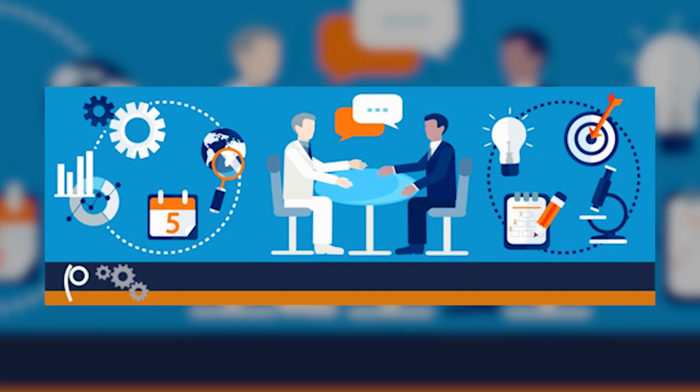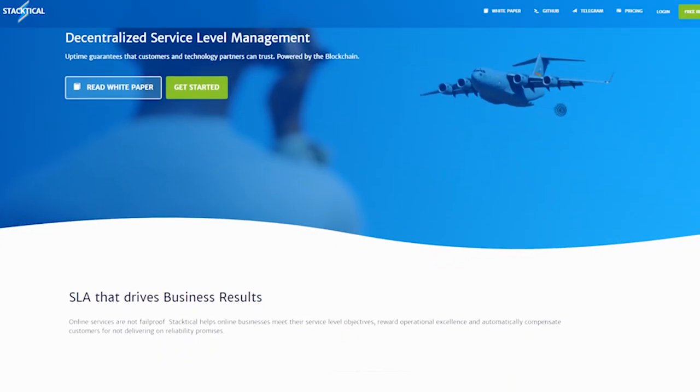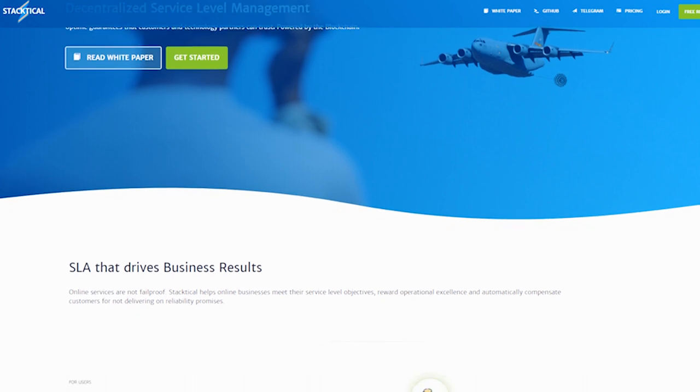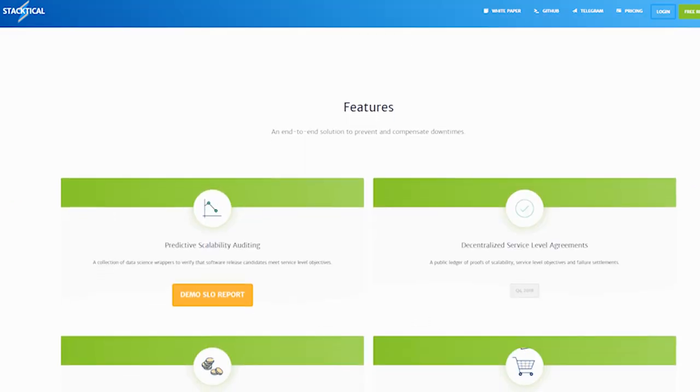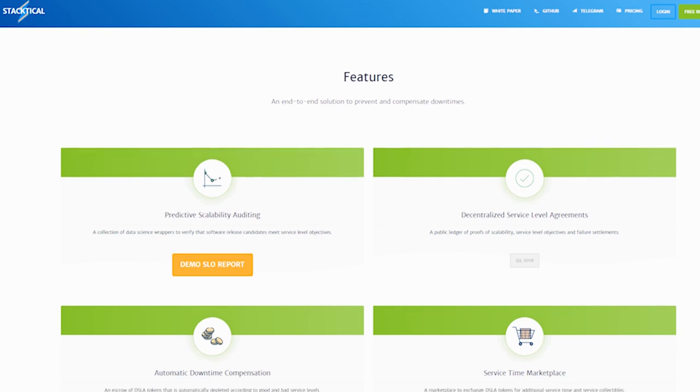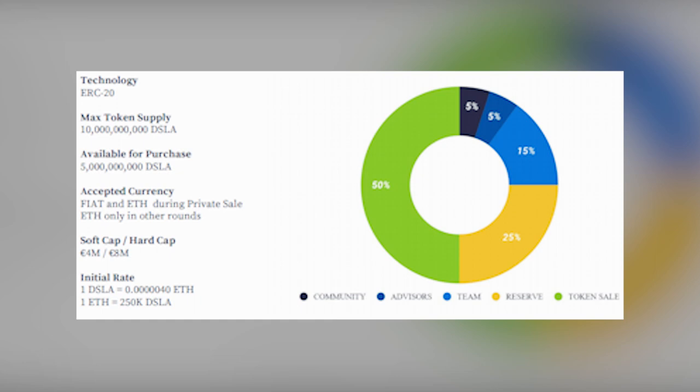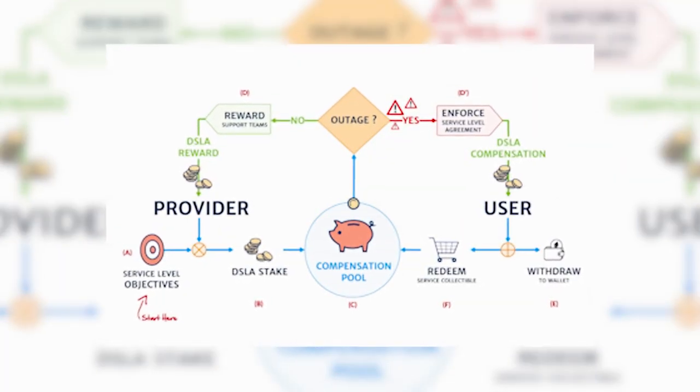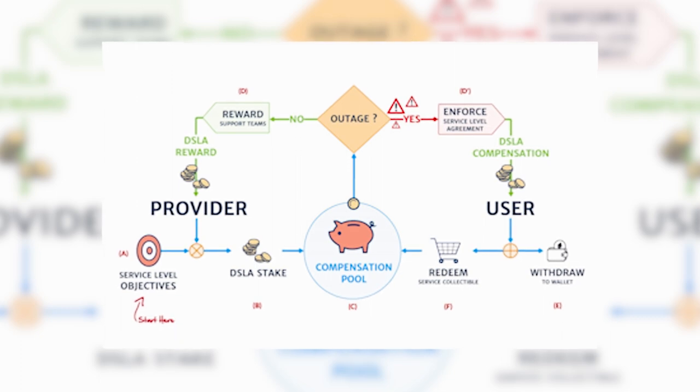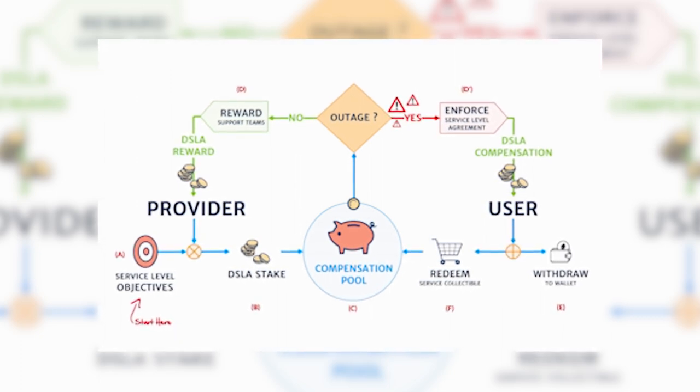Internet providers will need to stake DSLA tokens when entering this agreement. SLAs will be monitored using a decentralized Oracle network. If specified service level objectives are reached, a token reward from the pool will automatically go to the providers.